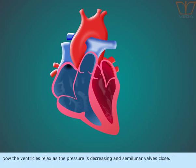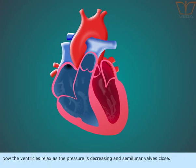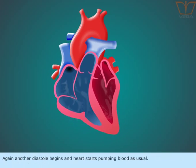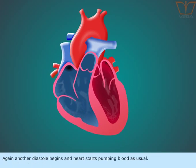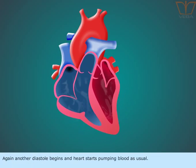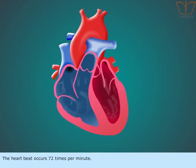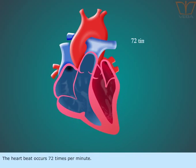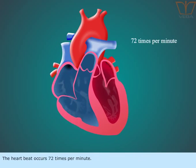Now the ventricles relax as the pressure decreases and the semilunar walls close. Again, another diastole begins and the heart starts pumping blood as usual. The heartbeat occurs 72 times per minute.